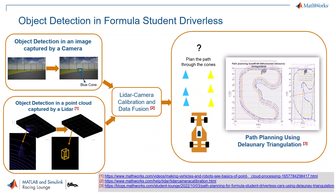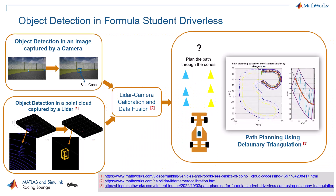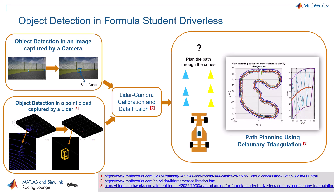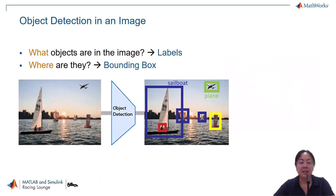For more details on other components, please refer to the reference. When detecting objects in an image, you usually ask two questions: what are they and where are they? By assigning labels and drawing bounding boxes around the objects of interest, as you can see in the image on the right.